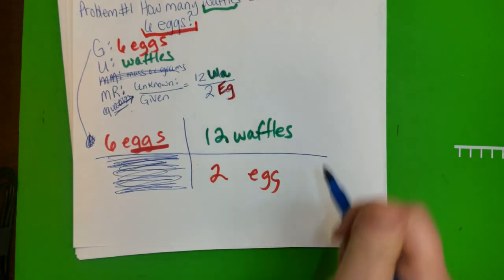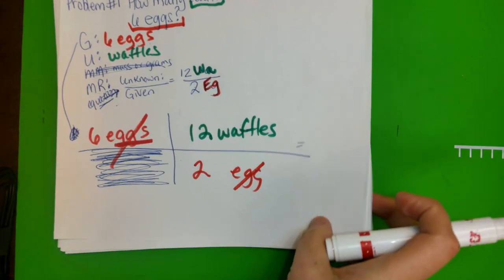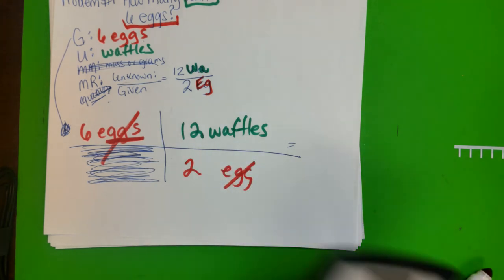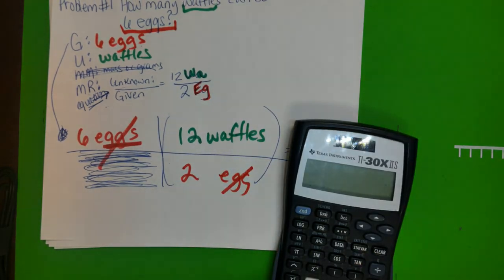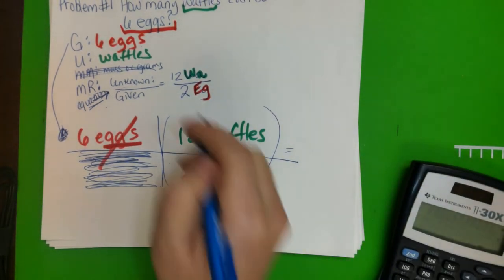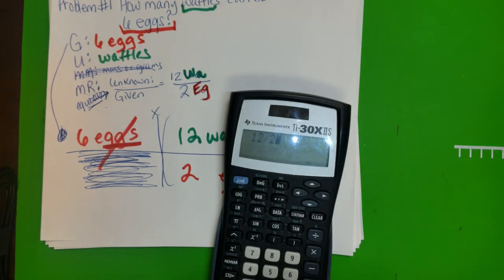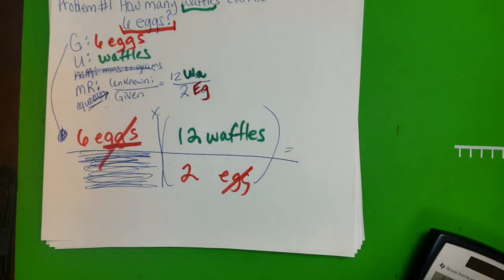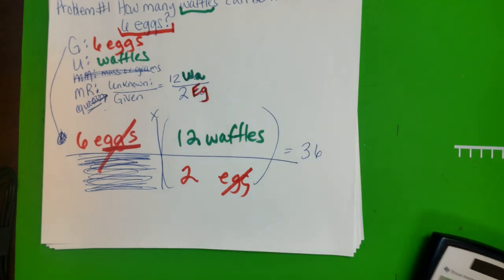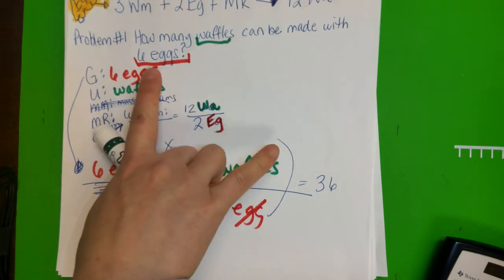Okay, so now this canceled out. Okay, so now you are ready to put it in the calculator. So again you could always divide this, you could always do that division first and then you multiply it by six. You could do that. So like 12 divided by two is six, and then six times six equals 36. And you see it's 36. So actually with six eggs, how many waffles are you gonna make with six eggs?